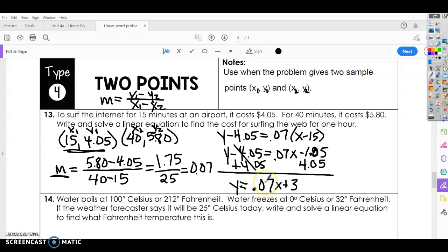Okay, so now I want to know, write and solve a linear equation to find the cost for surfing the web for one hour. Okay, now be careful again here. We did 15 minutes and 40 minutes. So how many minutes are in an hour? That's what you have to plug in to find this. So we're going to have y equals 0.07 times, we know that there are 60 minutes in one hour, plus you're starting them out $3.